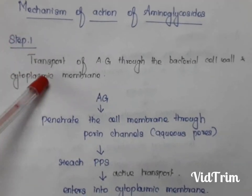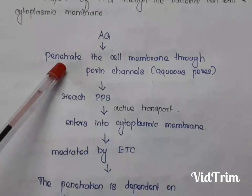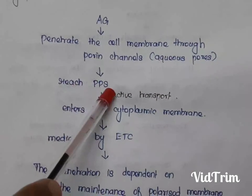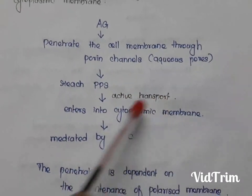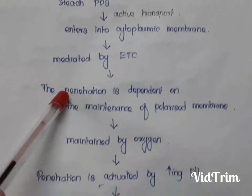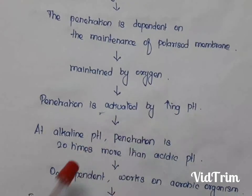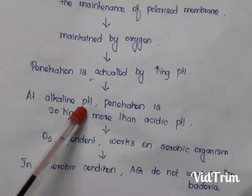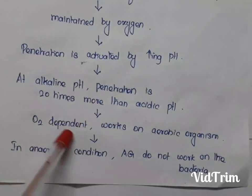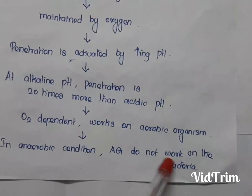The mechanism of action of aminoglycosides involves two steps. Step one is transport of aminoglycosides to the bacterial cell wall and cytoplasmic membrane. Aminoglycosides first penetrate the cell membrane through porin channels — the aquaporins — reaching the periplasmic space. Then by active transport mediated by the electron transport chain, they enter the cytoplasmic membrane. This penetration depends on a polarized membrane maintained by oxygen, and is activated by alkaline pH — penetration is 20 times greater at alkaline than acidic pH. Since it is oxygen-dependent, aminoglycosides work only on aerobic organisms.